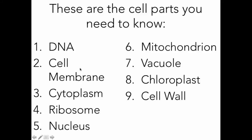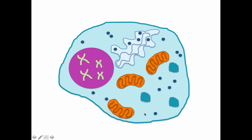Here's a recap of the cell parts you need to know: DNA, the cell membrane, cytoplasm, ribosomes, the nucleus, the mitochondrion, vacuole, chloroplast, and cell wall. Now let's see what you know — here's an animal cell. Let's go ahead and label its different parts.